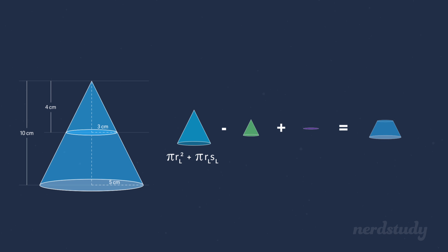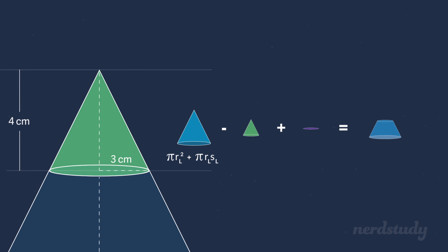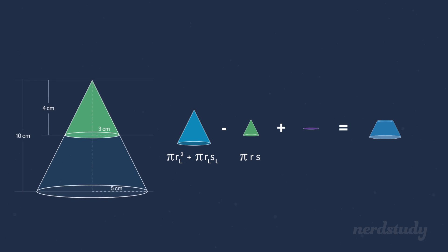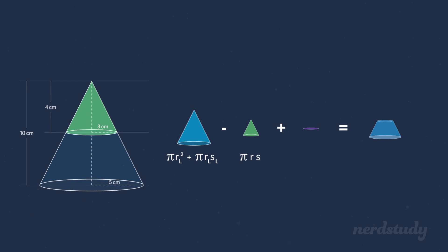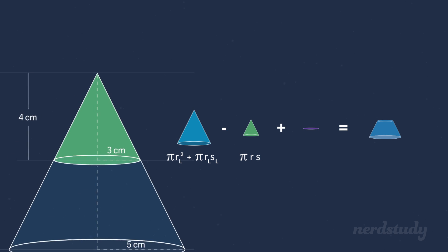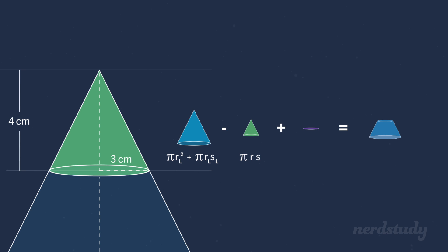Now, what's the lateral area of the small cone? Well, the lateral area is just this part right here. And we know that the formula for finding the lateral area is pi r s. But instead of looking at the large radius and large slant height, we should be looking at the small radius and small slant height. So we'll denote these variables with subscripted s for both.